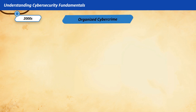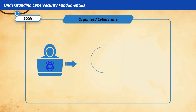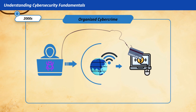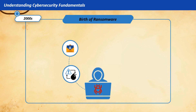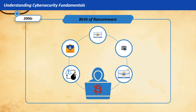Growing Cybercrime — 2000s. Cybercriminals formed organized groups, using the Internet to make money. This led to the rise of phishing attacks that tricked users into revealing sensitive information. Ransomware also became a major threat, as seen with CryptoLocker malware (2013), which locked users out of their data and demanded payment to restore it.